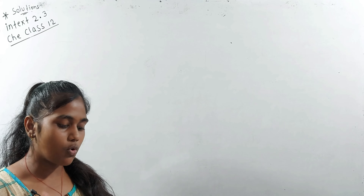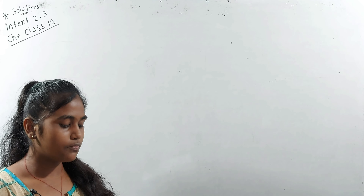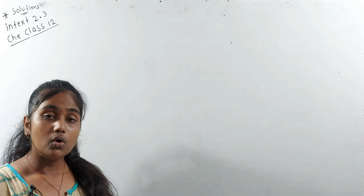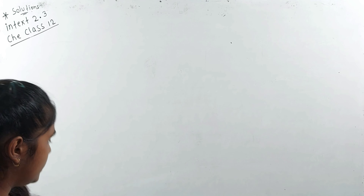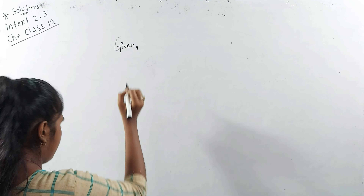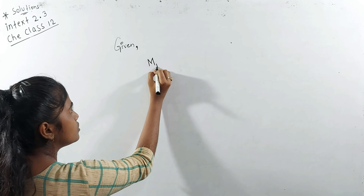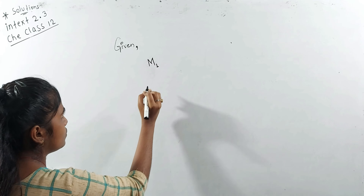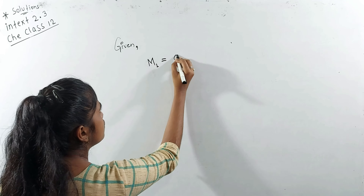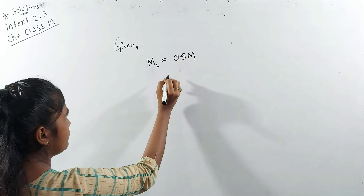Molarity equals moles of solute divided by volume, which is 30/291 divided by 4.3. We calculate this and get 0.024 mol per liter. Mol per liter is the molarity unit. So that's it — we have solved question 2.3 part A.